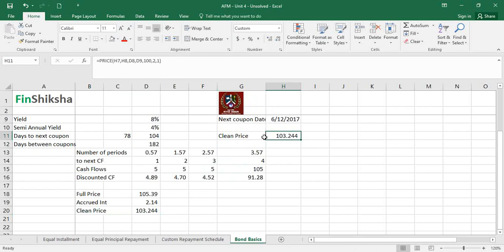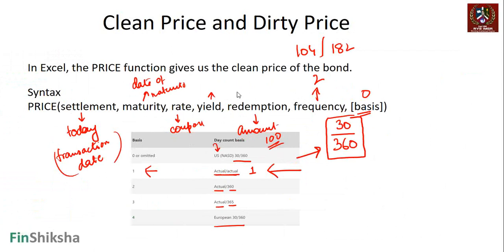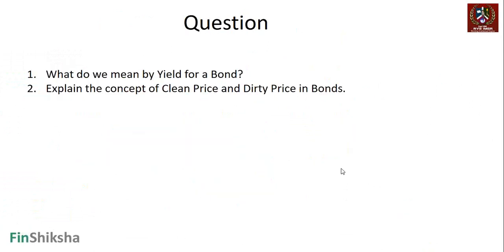To this clean price we can add the accrued interest to obtain the full price, or dirty price. The PRICE function in Excel gives the clean price. Clean price plus accrued interest equals the dirty price, which is what is actually quoted in the market — it incorporates the accrued interest component. Two quick review questions: what do you mean by the yield for a bond, and explain the concept of clean price and dirty price in bonds.